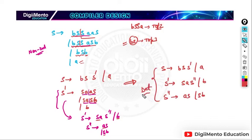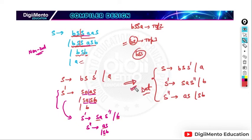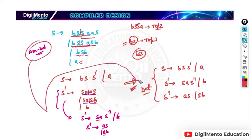We could also take 'bss' as the common prefix — there are multiple valid cases. After working through this example, it should be clear how to convert a non-deterministic grammar into a deterministic grammar.